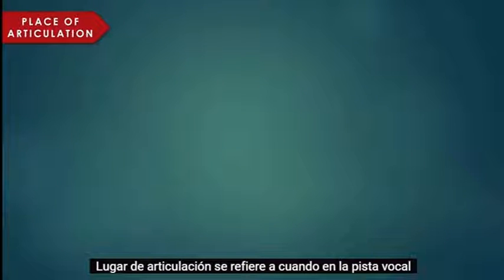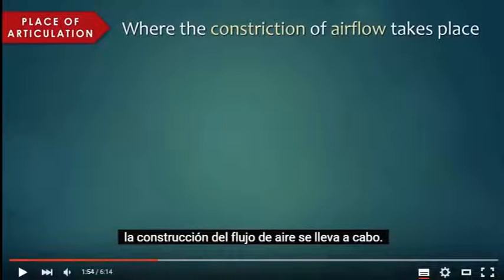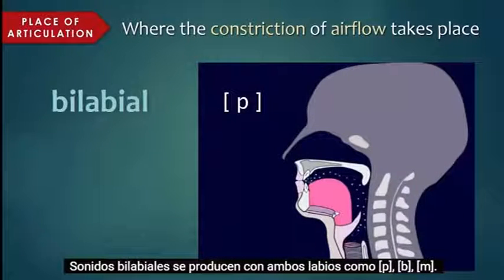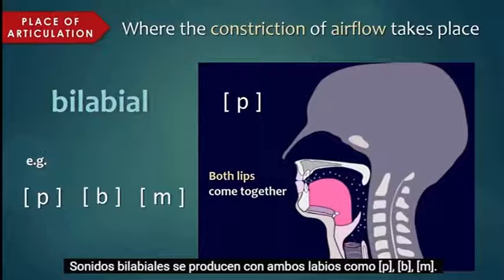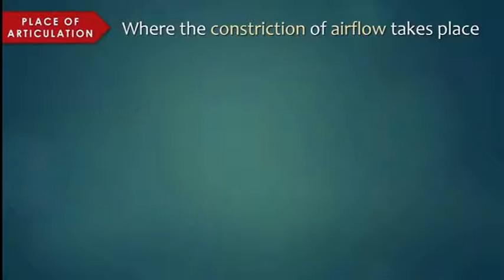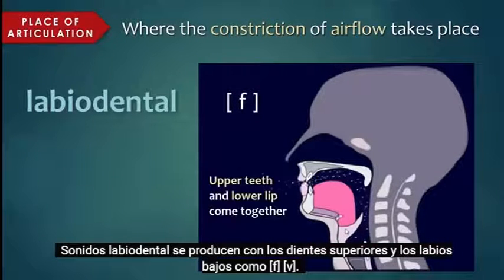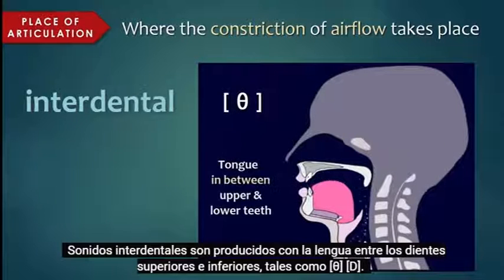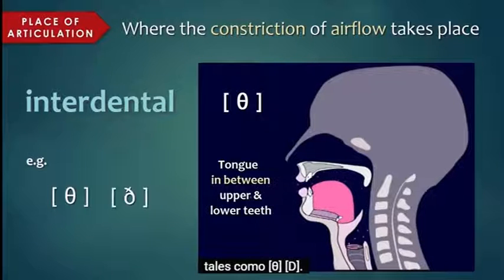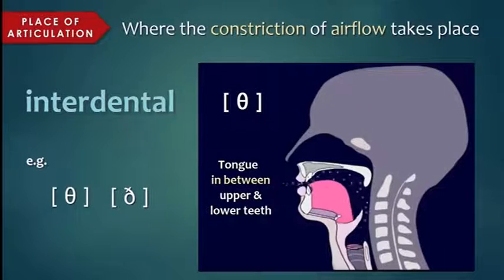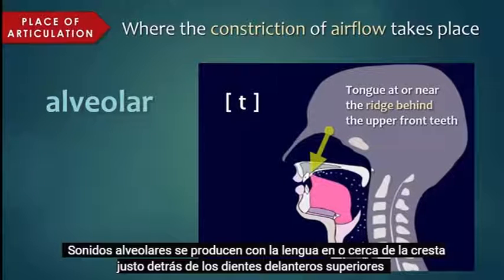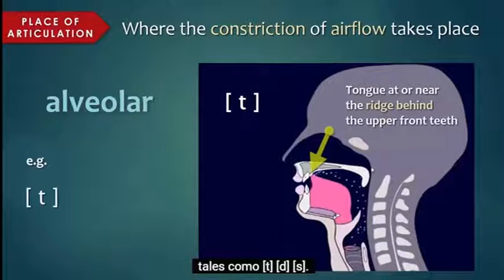Place of articulation refers to where in the vocal tract the constriction of airflow takes place. Bilabial sounds are produced with both lips, like p, b, m. Labiodental sounds are produced with the upper teeth and the lower lip, such as f, v. Interdental sounds are produced with the tongue in between the upper and lower teeth, such as th. Alveolar sounds are produced with the tongue at or near the ridge right behind the upper front teeth, such as t, d, s.